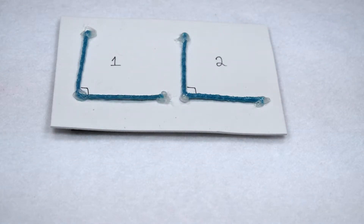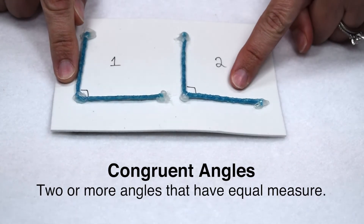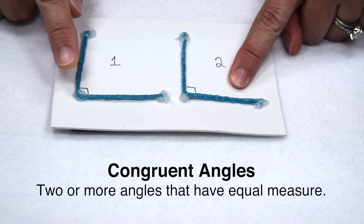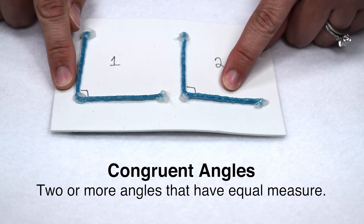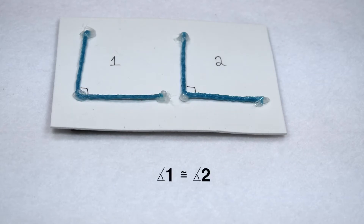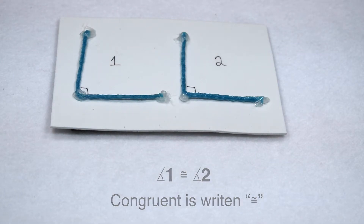Let's start with congruent angles. Congruent angles are two or more angles that have an equal measure. So here, our right angles would be congruent because angle 1 and angle 2 both measure 90 degrees. We could write this out symbolically to say that the measure of angle 1 is congruent to the measure of angle 2. The symbol for congruent is an equal sign with a similar sign over it.